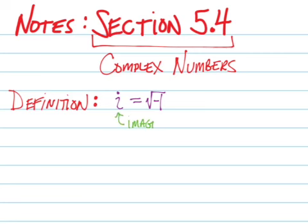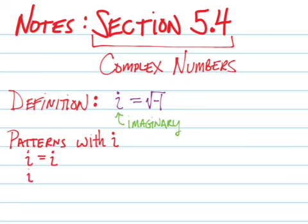First thing we do is call this our imaginary component and look at some patterns within i. i equals i. If we square everything, the square root of negative 1 undoes the square root, and we are left with negative 1.